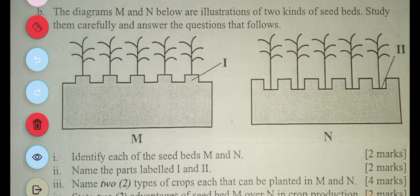The next question says: the diagrams M and N are illustrations of two kinds of seed beds. Study them carefully and answer the questions that follow. So identify M and N. M is raised bed, and then N is sunken bed.